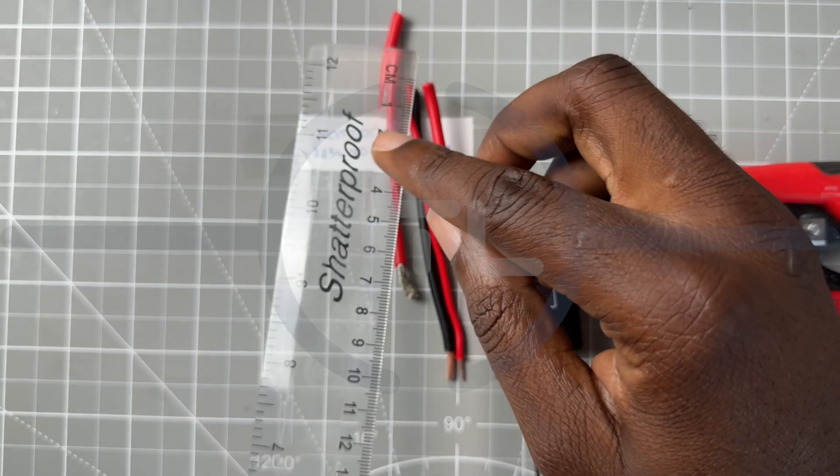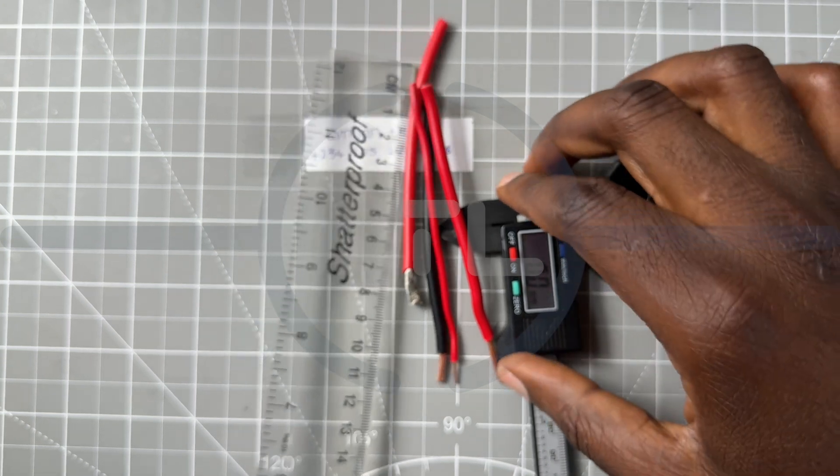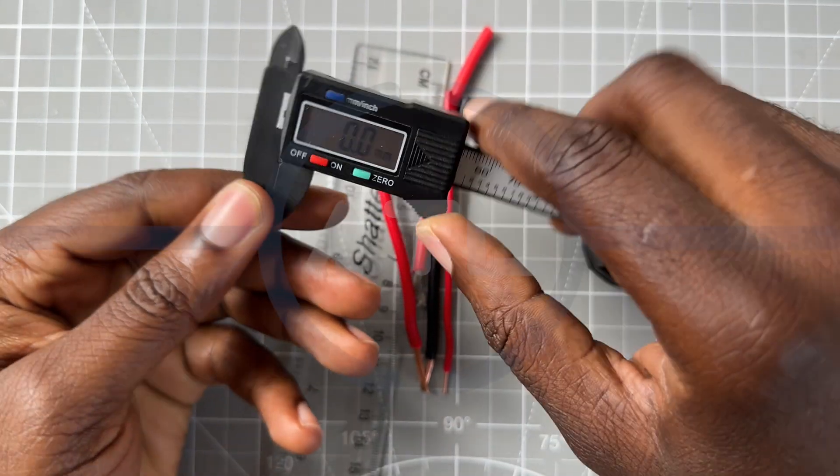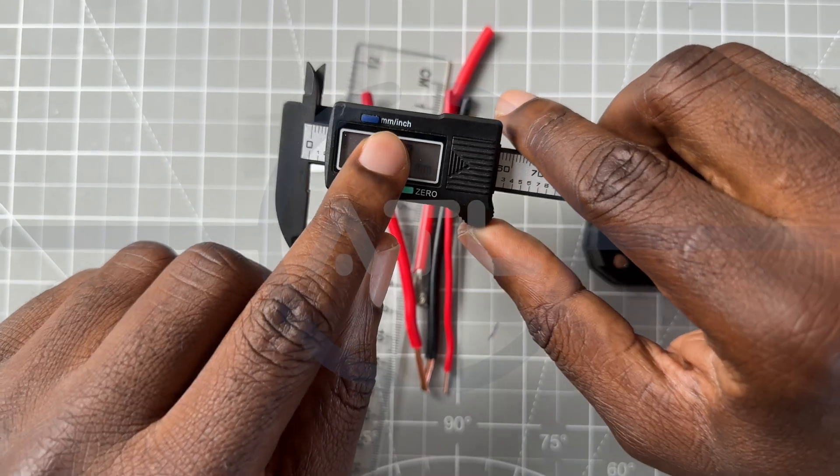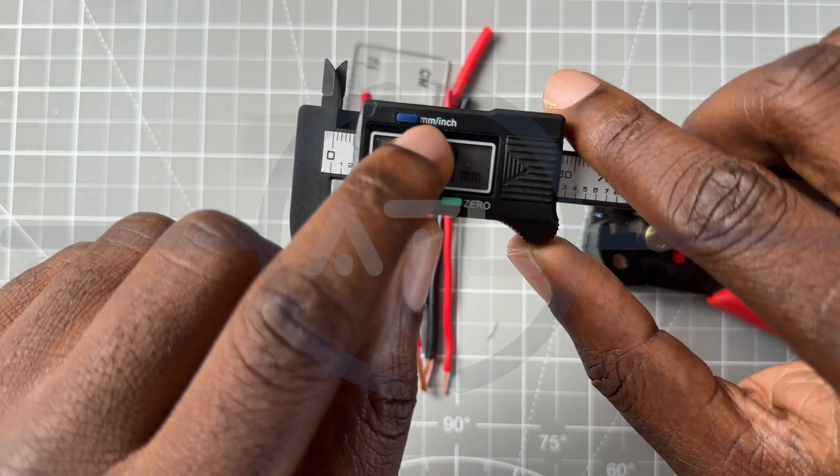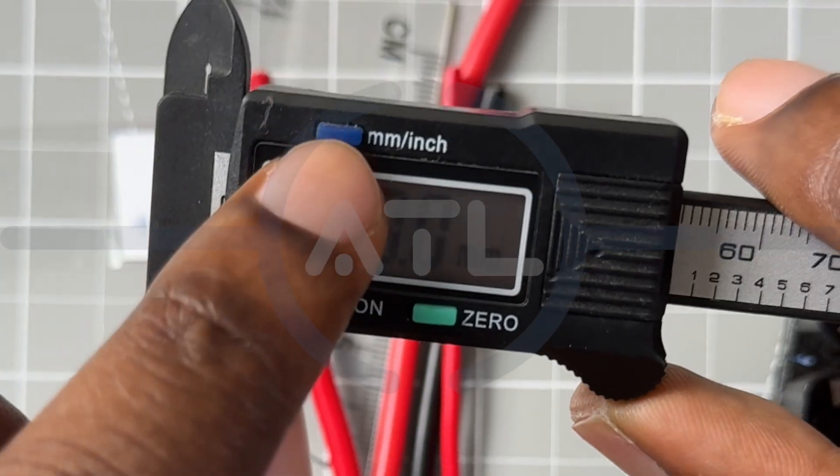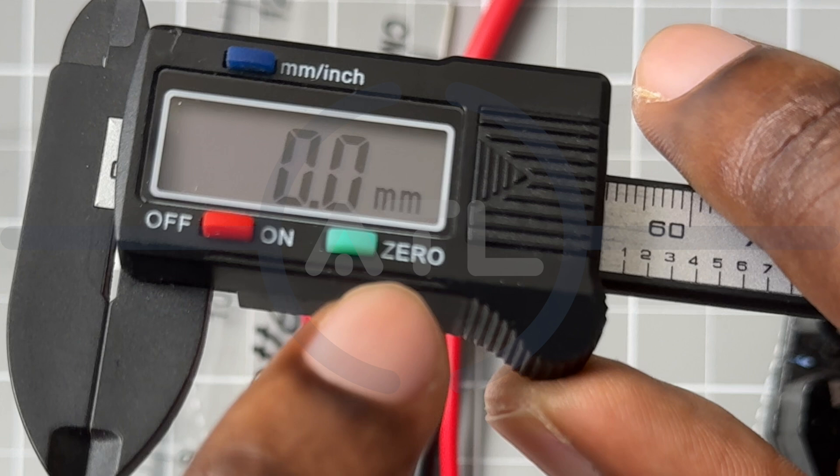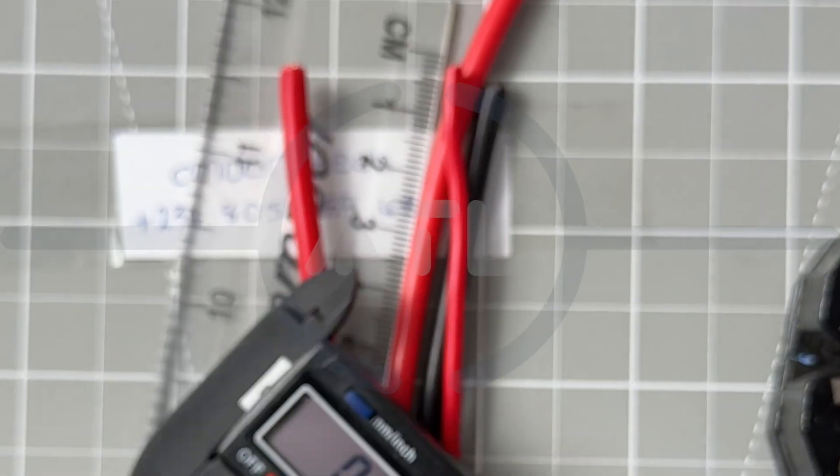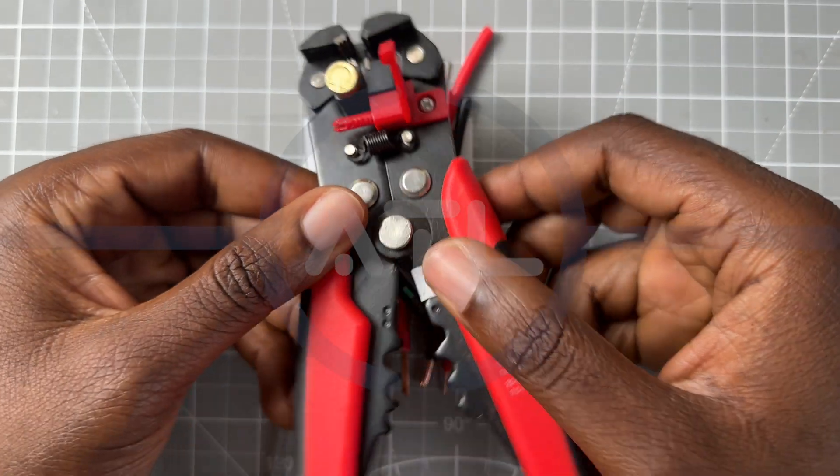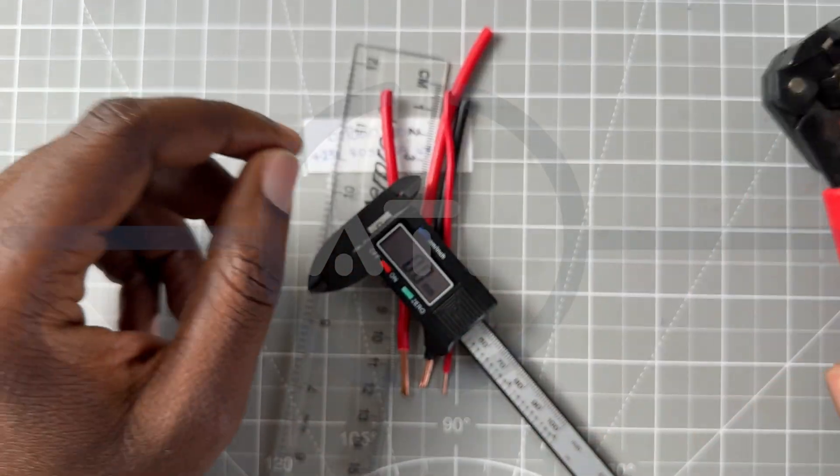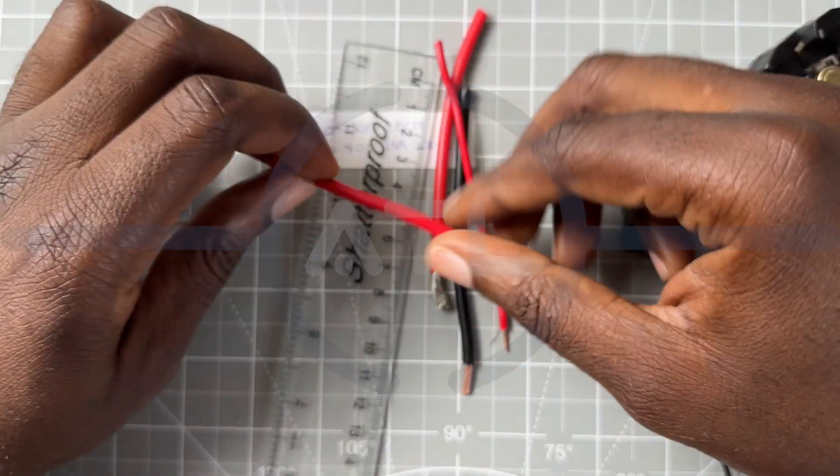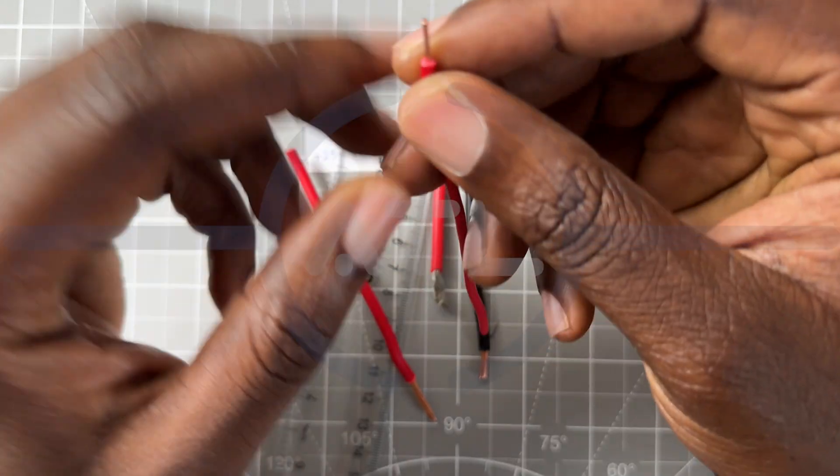And then next we have this thing here to let us know the measurement in millimeters. So we can take in millimeters or in inches. We have at the mm setting and you can also see in the screen this is 0.0 mm. Next we'll need this also, this is called a wire stripper.